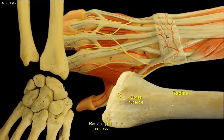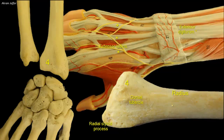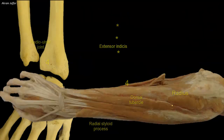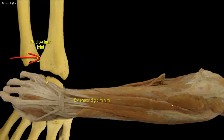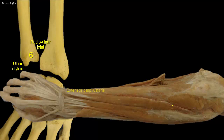Between the narrow groove for the tendon of extensor pollicis longus and the ulnar border of the radius is a shallow depression for the tendons of extensor digitorum and the deeper-lying extensor indicis. Over the radio-ulnar joint passes extensor digiti minimi in compartment 5. Lastly, in compartment 6, the most medial groove near the ulnar styloid process transmits extensor carpi ulnaris.